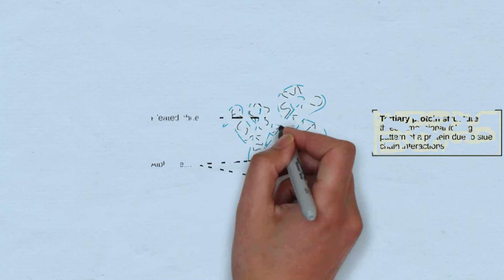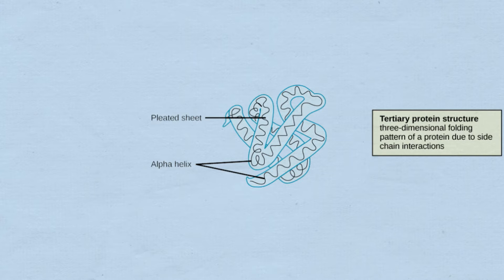The tertiary structure of a protein is when the protein folds into its final three-dimensional shape. Most proteins in the tertiary structure are now functional. The tertiary structure of a protein is held together by hydrogen bonds, ionic bonds, disulfide bonds and van der Waals interactions.